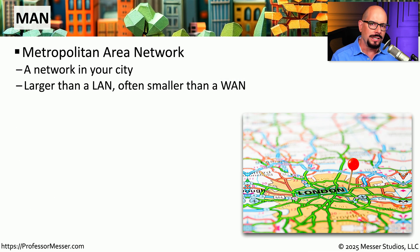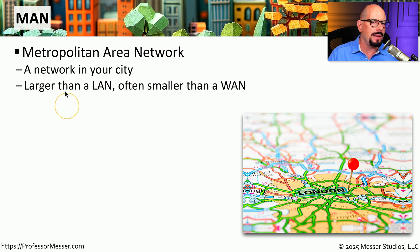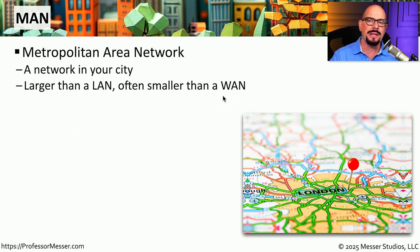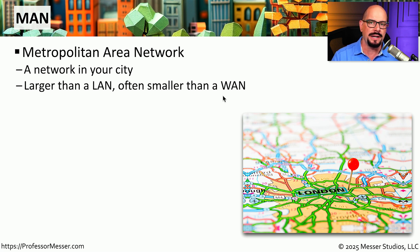We've talked about a local area network and a wide area network, but there is a network that sits in the middle of those two — that would be a metropolitan area network or a MAN. This is a network that tends to be in a single geographical area, such as a city. If we have a lot of remote locations around the same city, we can usually connect to those using a metropolitan area network.